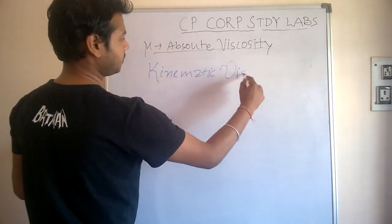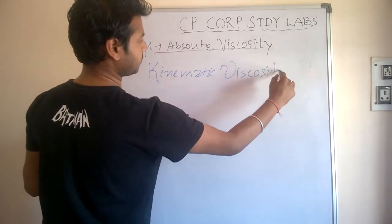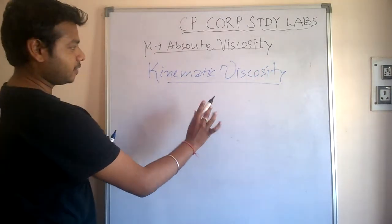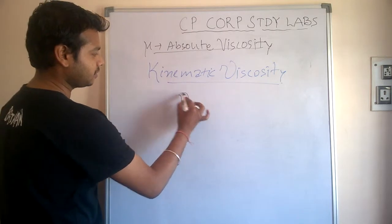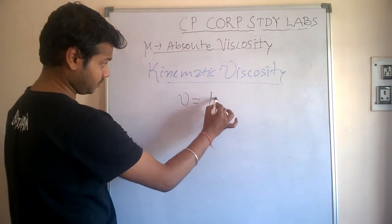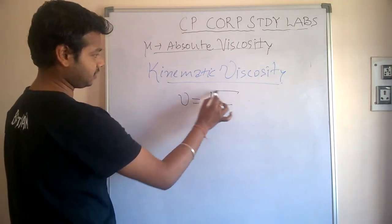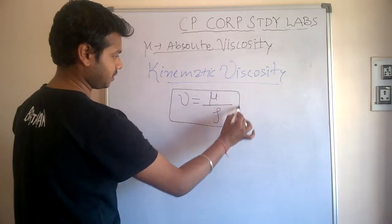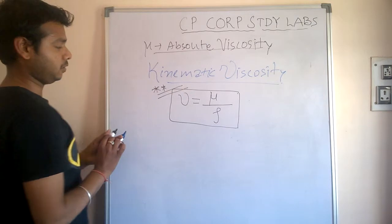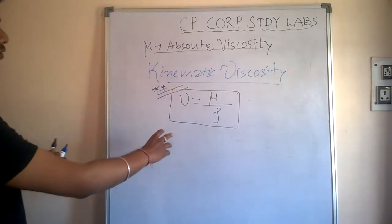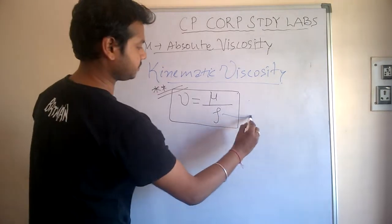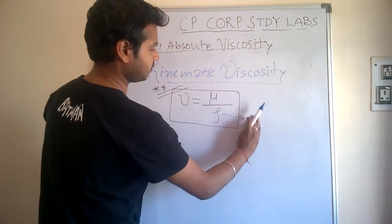Kinematic viscosity: ν equals μ upon density. Very important - its unit: kinematic viscosity ν equals μ upon ρ. ρ is density.